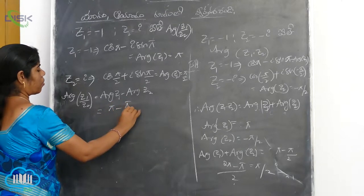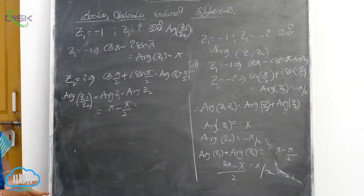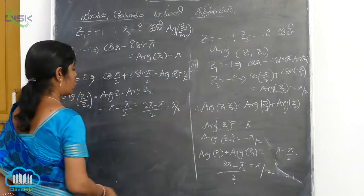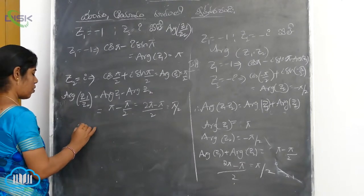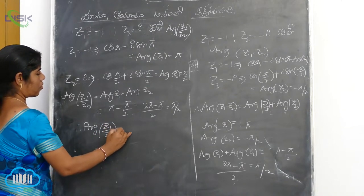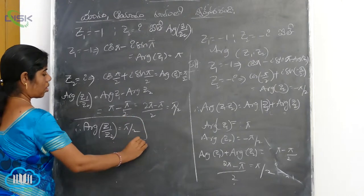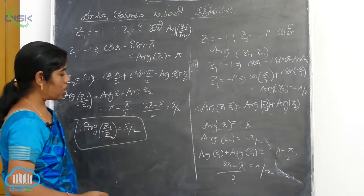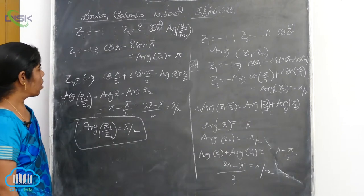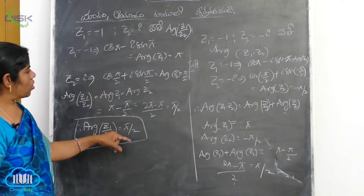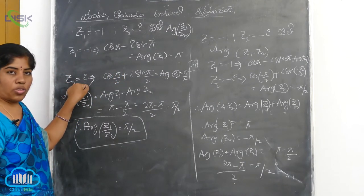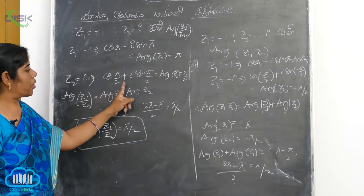Pi minus pi by 2, which is equal to 2 pi. Comparing, 2 pi minus pi by 2 gives pi by 2. So the final conclusion is: the argument of Z1 minus Z2 equals pi by 2. We can come to the conclusion that arg(Z1/Z2) equals pi by 2.